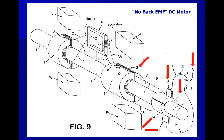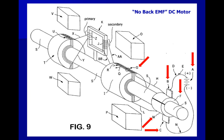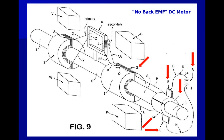The back EMF generated in the main armature winding G is actually an AC signal. The DC source A, however, sees the back EMF as DC because of the mechanical rectification of the commutator segments F and M and brushes B and C. Because of this continuous mechanical rectification, the DC source A never sees a change in the polarity of the back EMF. So even though the actual back EMF generated in the main armature winding G is an AC signal, the DC source A always sees it as a DC signal.